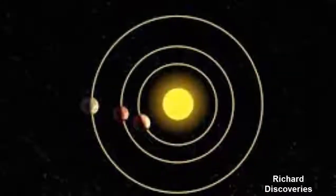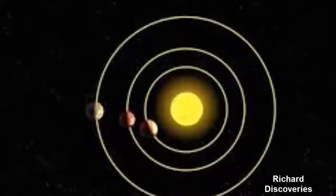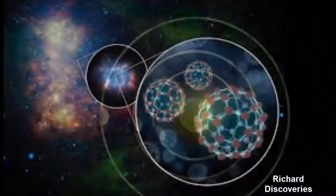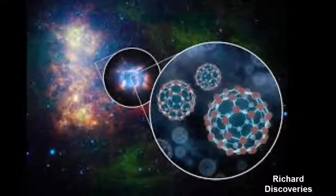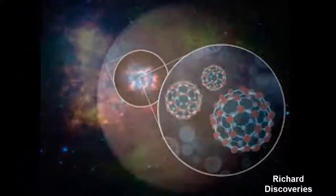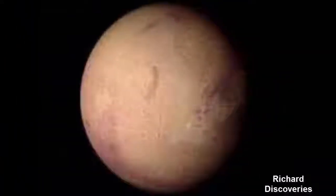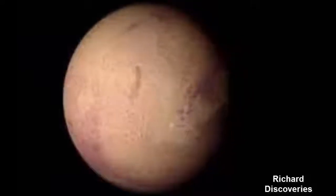Gliese 3470b resembles a cross between Earth and Neptune, with a large rocky core buried under a deep, crushing hydrogen and helium atmosphere. Its mass is 12.6 times that of Earth, but somewhat less than that of Neptune, which weighs in at 17 Earth masses.